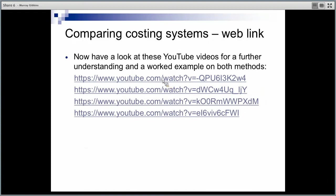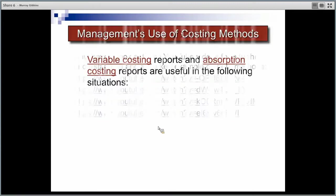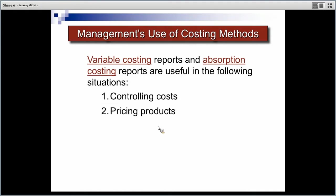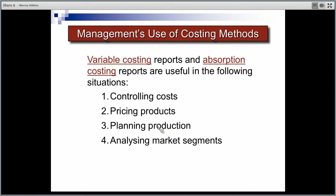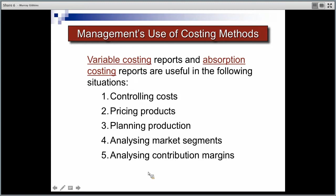There are some YouTube clips that you might find helpful to chase up — they'll give you more examples and a better understanding of what's going on in these two methods. Both reports are helpful in terms of planning, budgeting, and analyzing where we're going. Variable costing is particularly helpful for looking at contribution margins, covering fixed costs, and breakeven analysis — keeping fixed costs separate maintains the cost-volume-profit relationship.